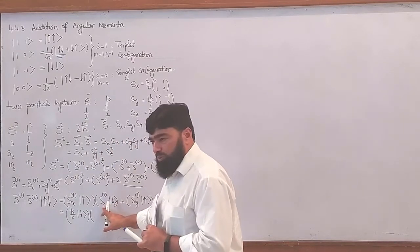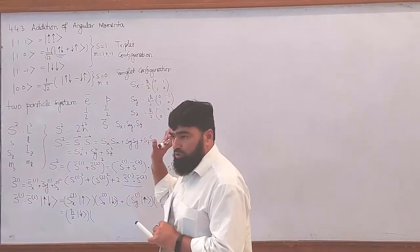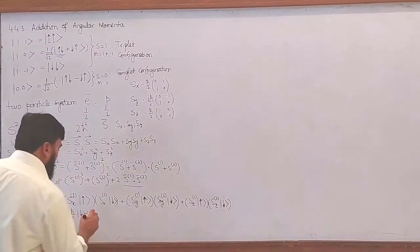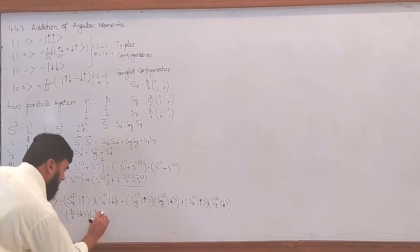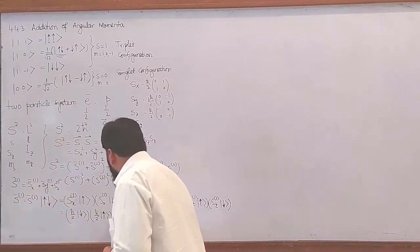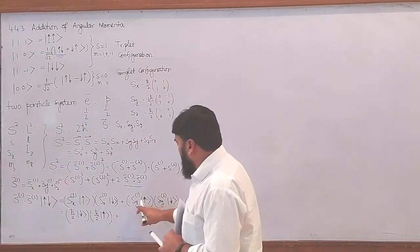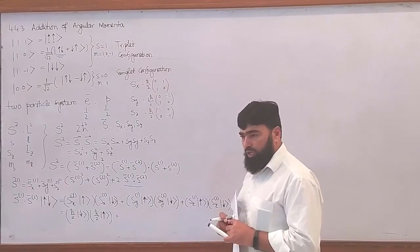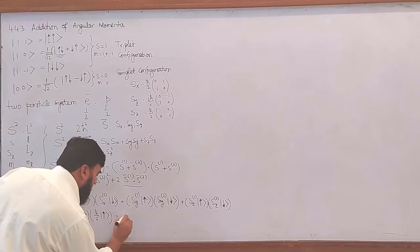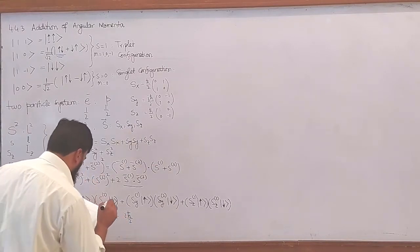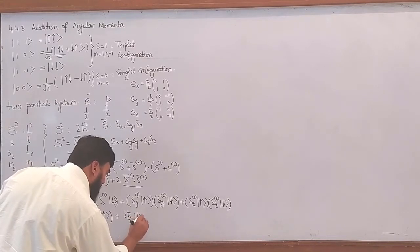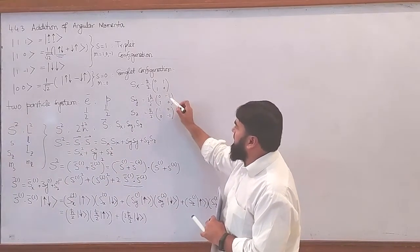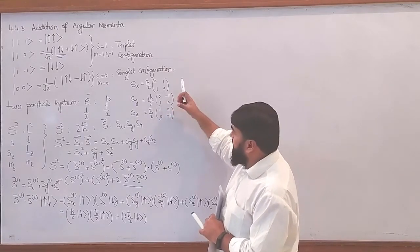Then what this one will do: it will again give h-bar over 2 as the eigenvalue. It is spin-down, so it will make it spin-up. Sub h-bar over 2 and it will make it spin-up. Also, when Sx operates on spin-up it produces i·h-bar over 2 as an eigenvalue, and sub i·h-bar over 2 is an eigenvalue, and it will make this spin-down.